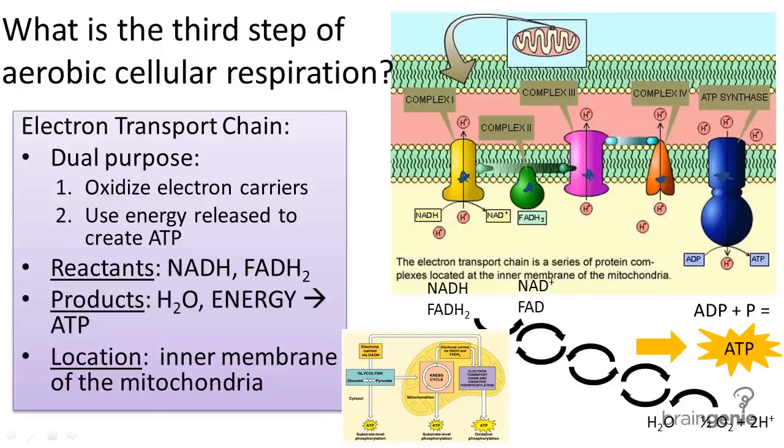Electron transport is the third process involved in aerobic cellular respiration, taking place in the inner membrane of a mitochondria, as you can see above or in this drawing here.